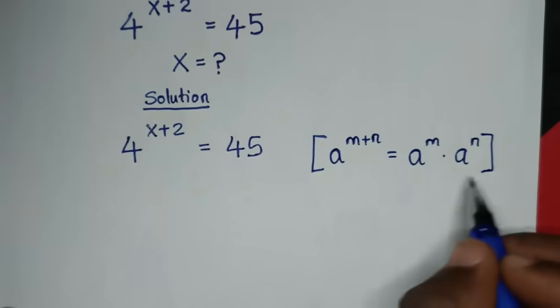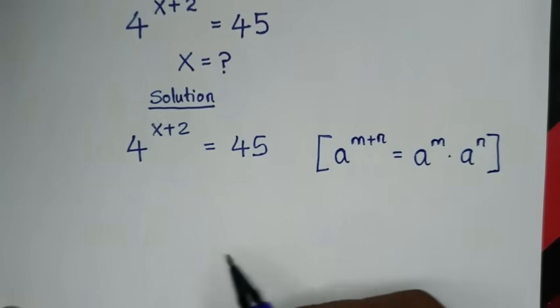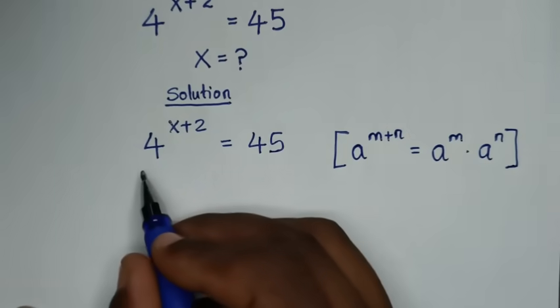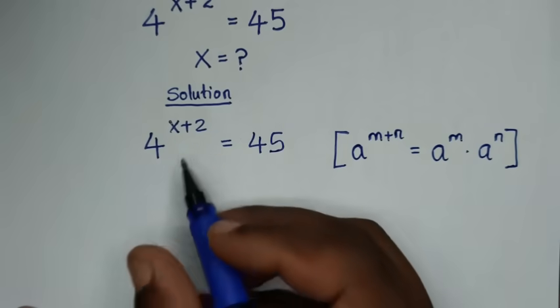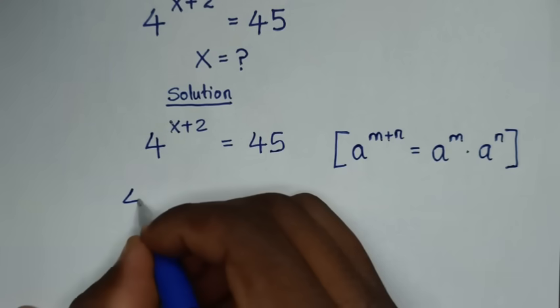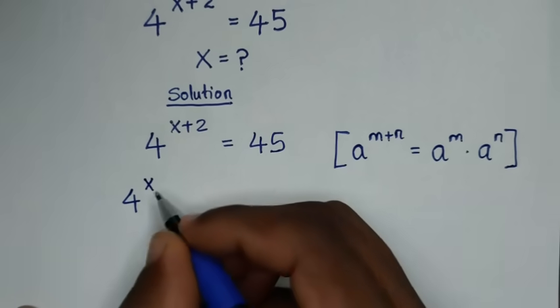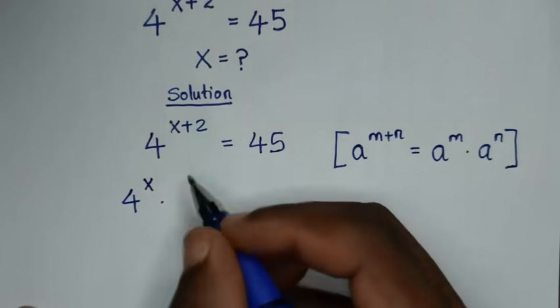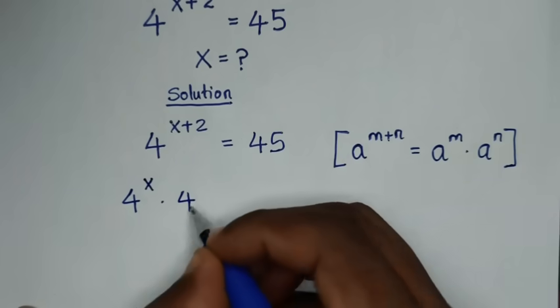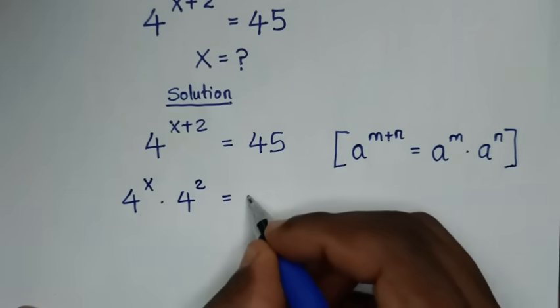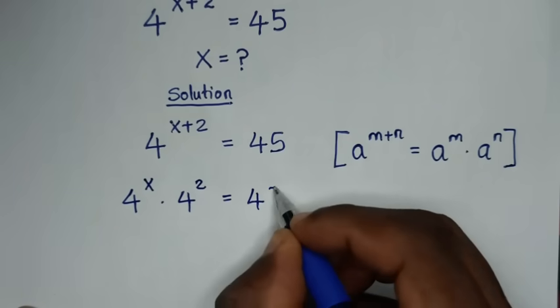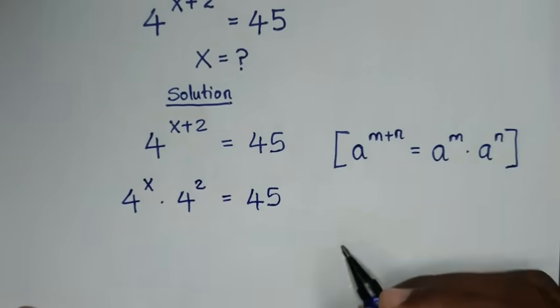So we will apply this form. Then, 4 power of x plus 2 will become 4 power of x times 4 power of 2, which is equal to 45.